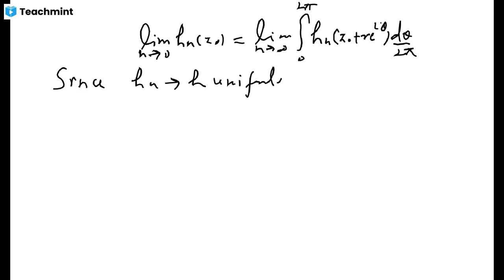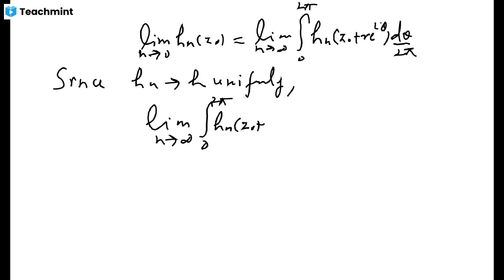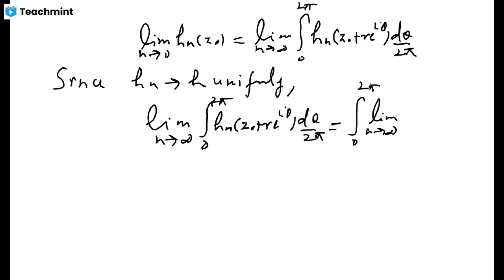The limit of hₙ is h itself, so this becomes (1/2π)∫₀²π h(z₀ + re^{iθ}) dθ. And the left-hand side is h(z₀). So we end up with the equation h(z₀) = (1/2π)∫₀²π h(z₀ + re^{iθ}) dθ, which says the value of h at z₀ equals the average of h on a circle of radius r centered at z₀.